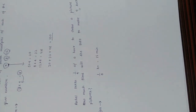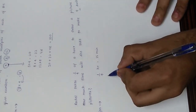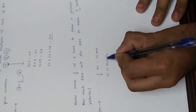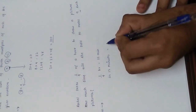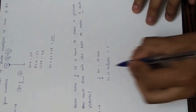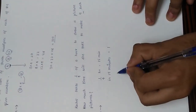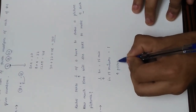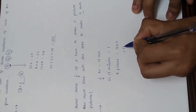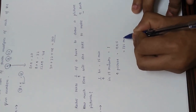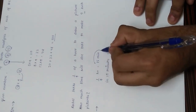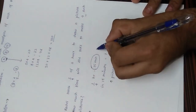In 15 minutes, Rachel draws one picture. For nine pictures, it will take 9 × 15 = 135 minutes. That is the answer.